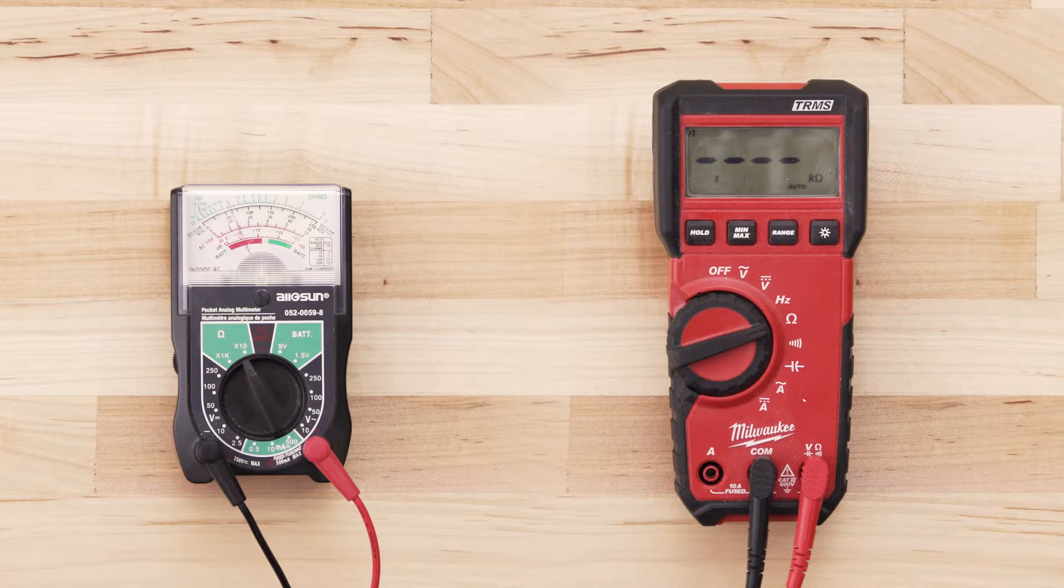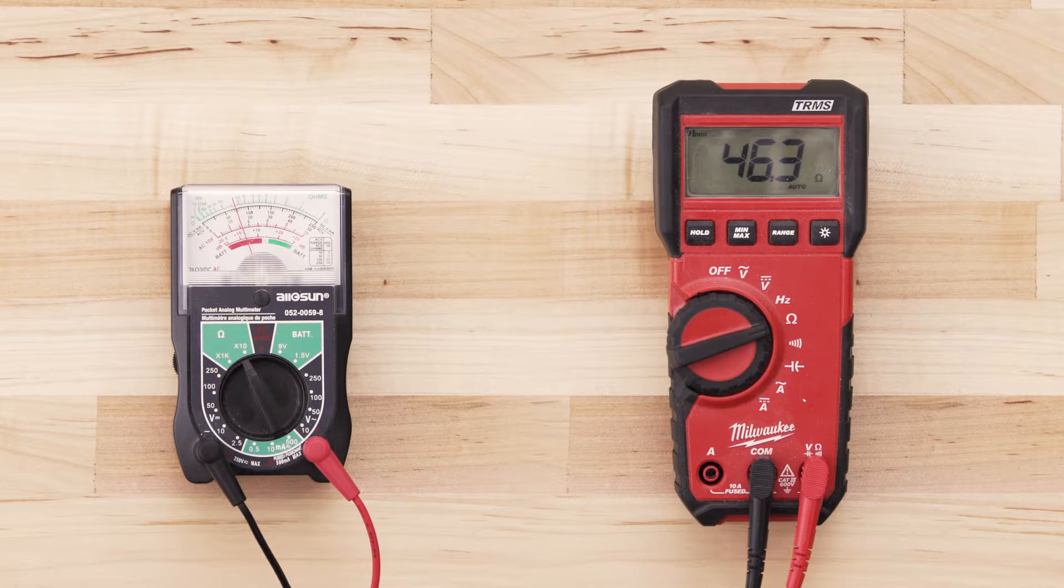If the element has continuity, your multimeter should read anywhere from zero to 50 ohms.